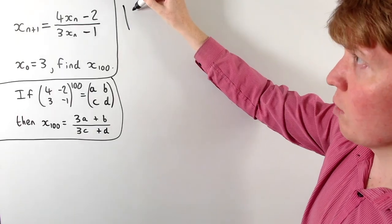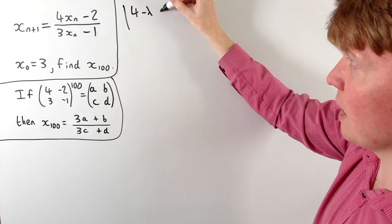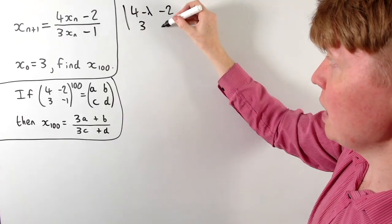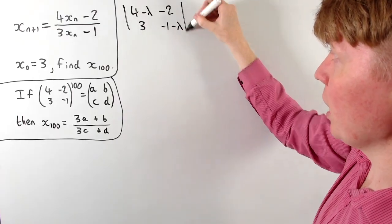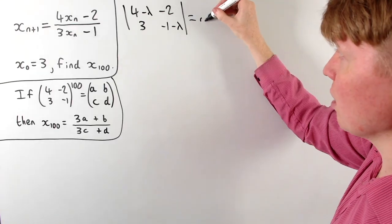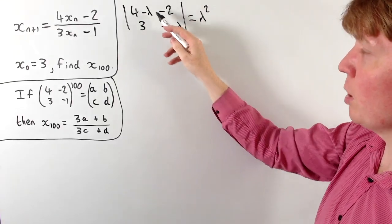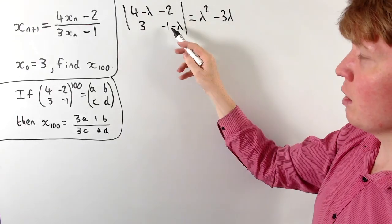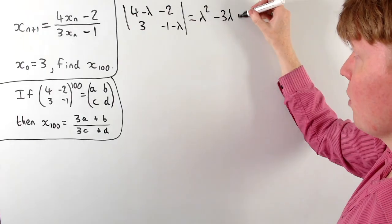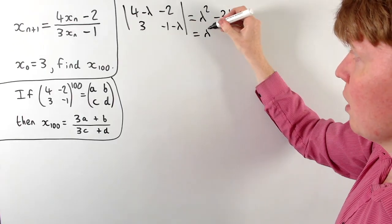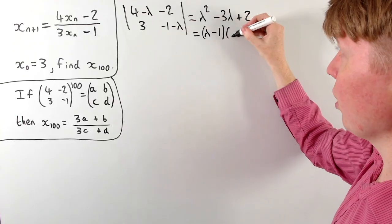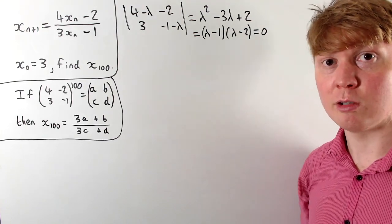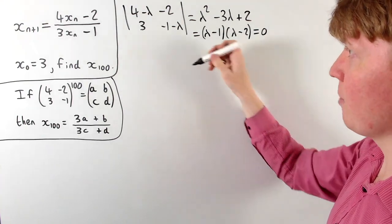We take the determinant of the matrix minus λ times the identity: (4 − λ)(−1 − λ) − (−2)(3), which gives λ² − 3λ + 2, factorising as (λ − 1)(λ − 2). Setting this equal to zero gives two distinct eigenvalues: λ₁ = 1 and λ₂ = 2.